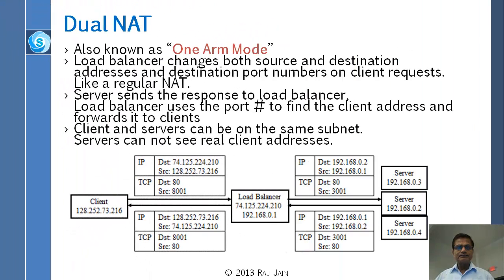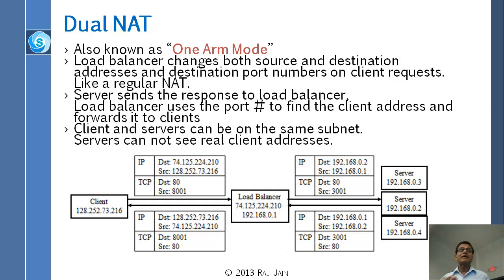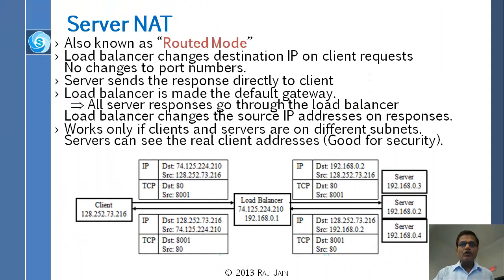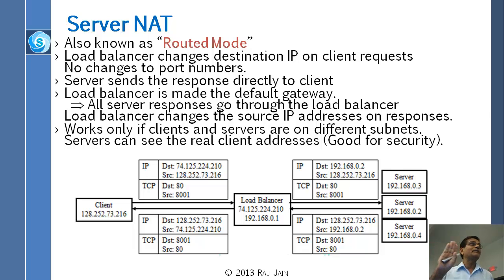In dual NAT, we change both the IP address as well as the source port. There is no problem — everything will come back to you regardless of what your address is, whether it is in the same subnet or different subnet. Then we go to server NAT. In server NAT, the only thing we change is the port number — just the port number. We are not changing the IP address.